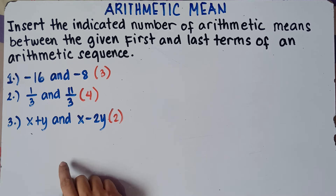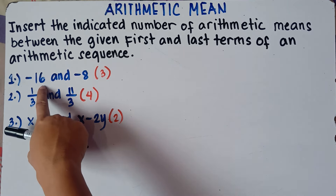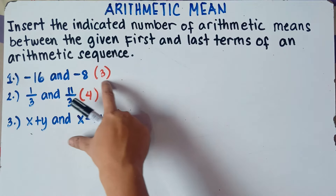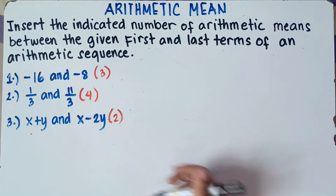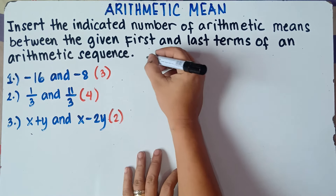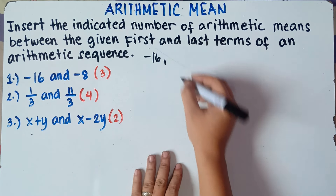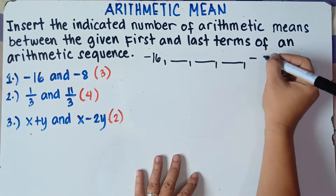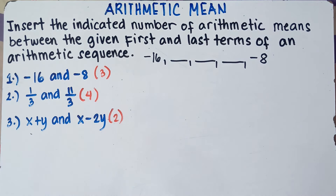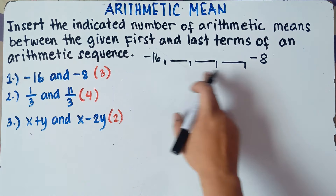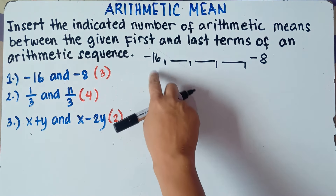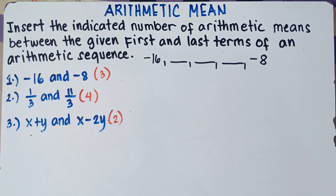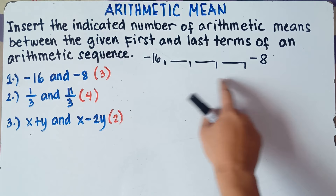For number one, we have a given first term of negative 16 and a given last term of negative 8, and we're going to insert three terms between them. To find those three terms, the thing you need to do is find the common difference.